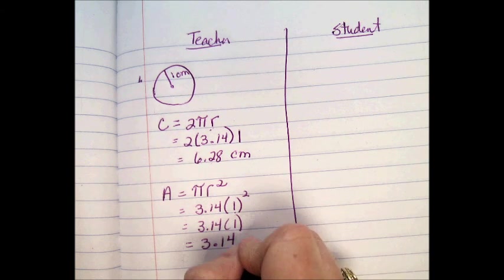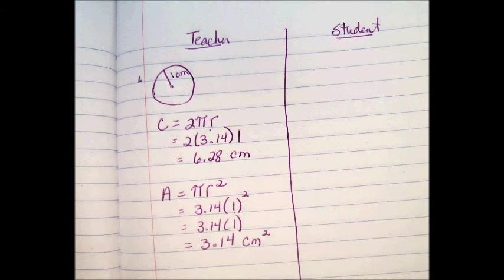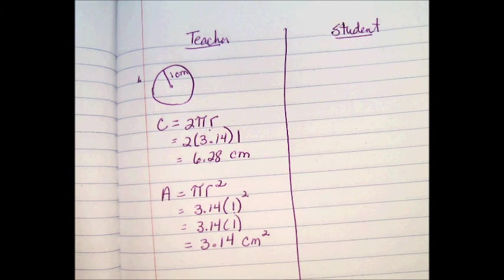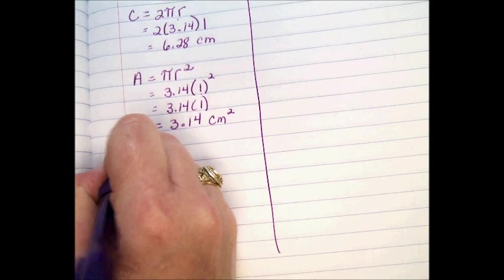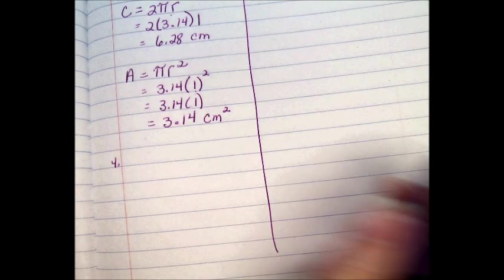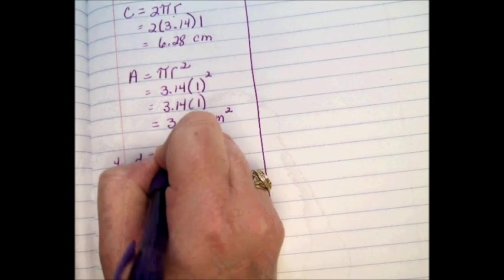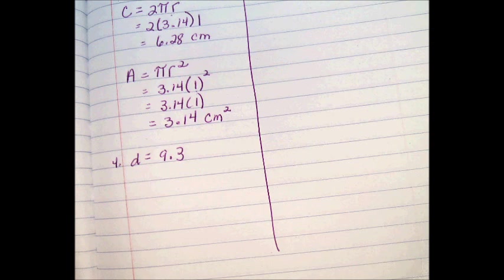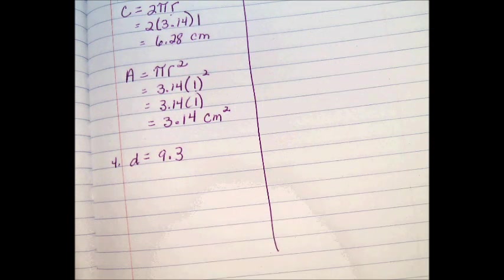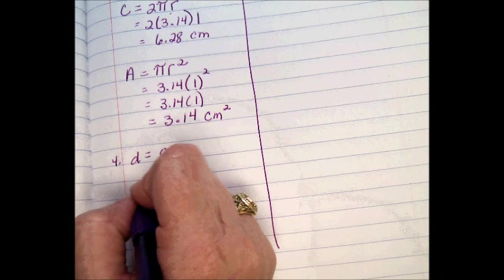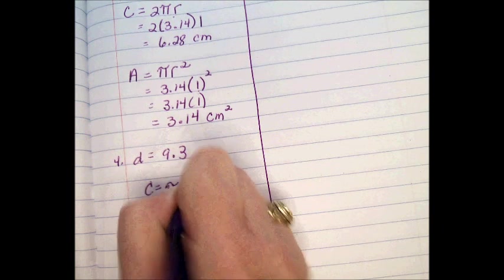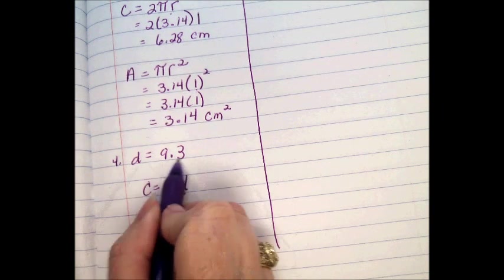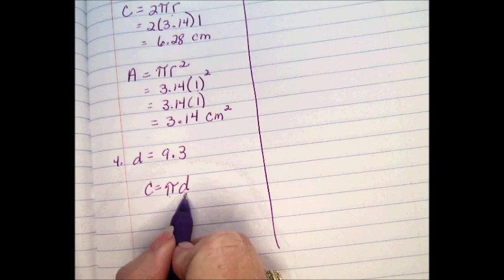I'm going to skip to number four. Number four says the diameter equals 9.3. First thing I'm going to do is find the circumference. The formula for circumference is pi. This time I'm going to use this formula, πd. Because the ingredient that I have is the diameter. So I'm going to use the one that calls for the diameter. So I've written my formula. Now I'm going to plug it in. 3.14 times 9.3.